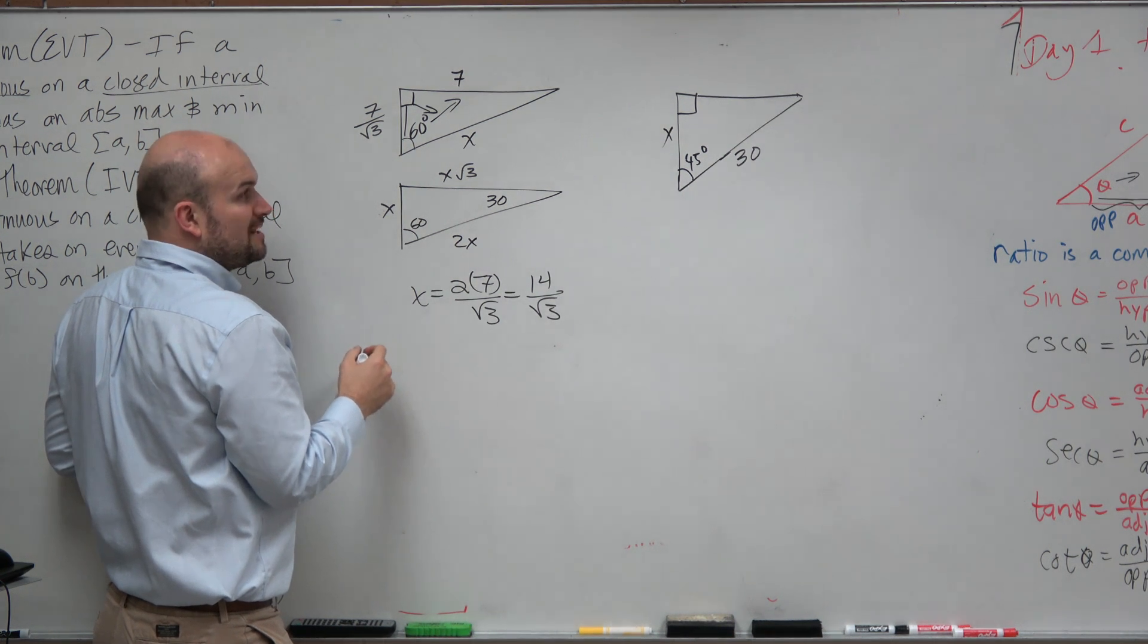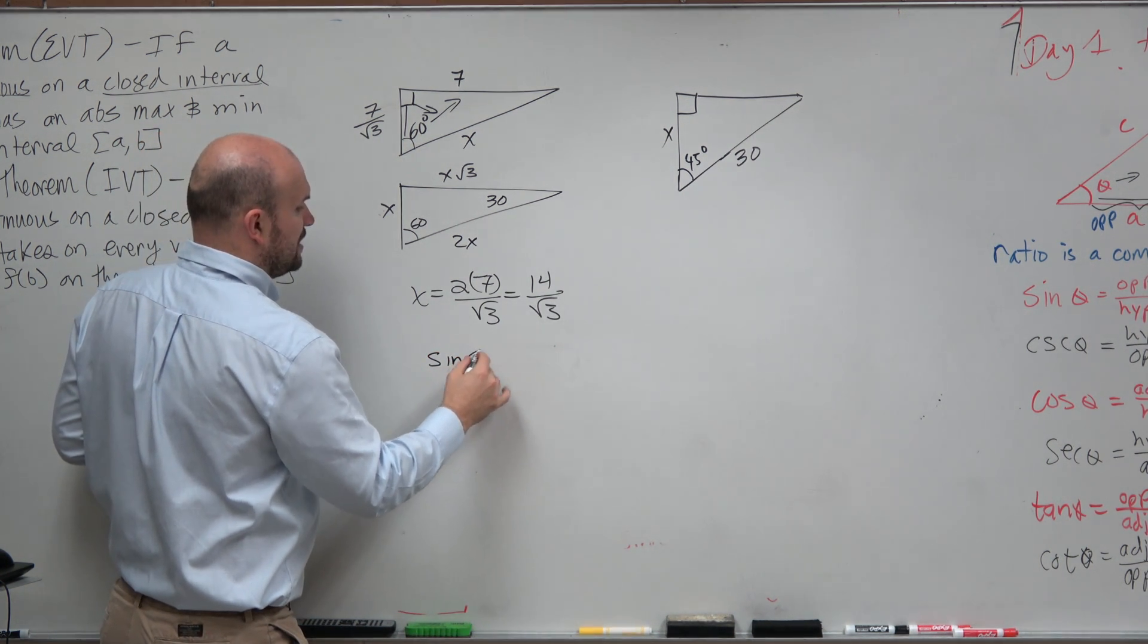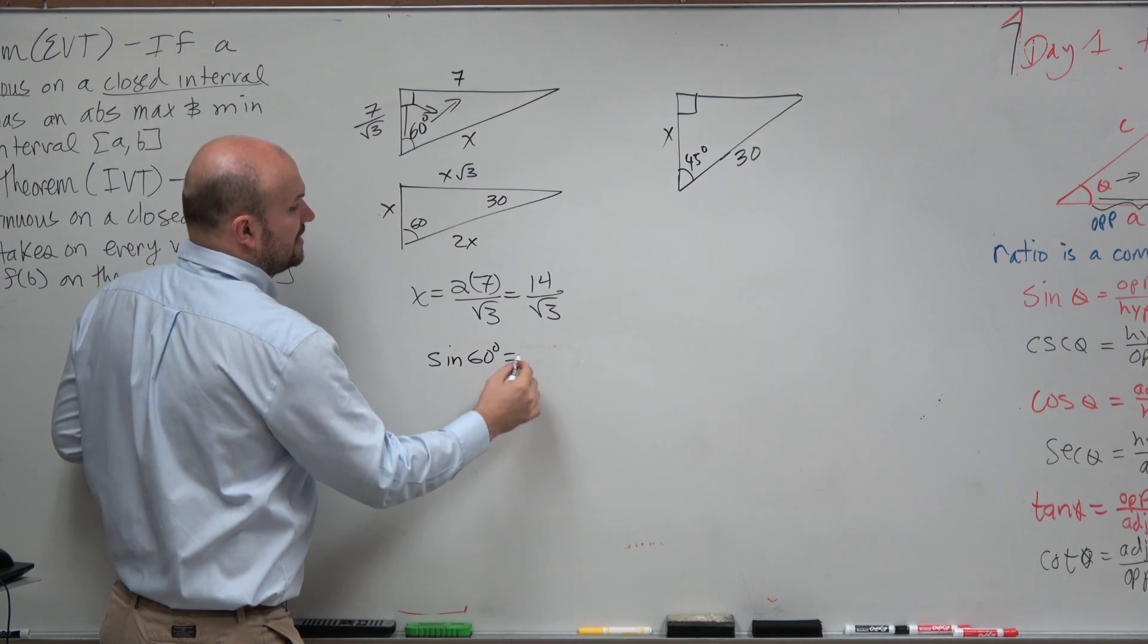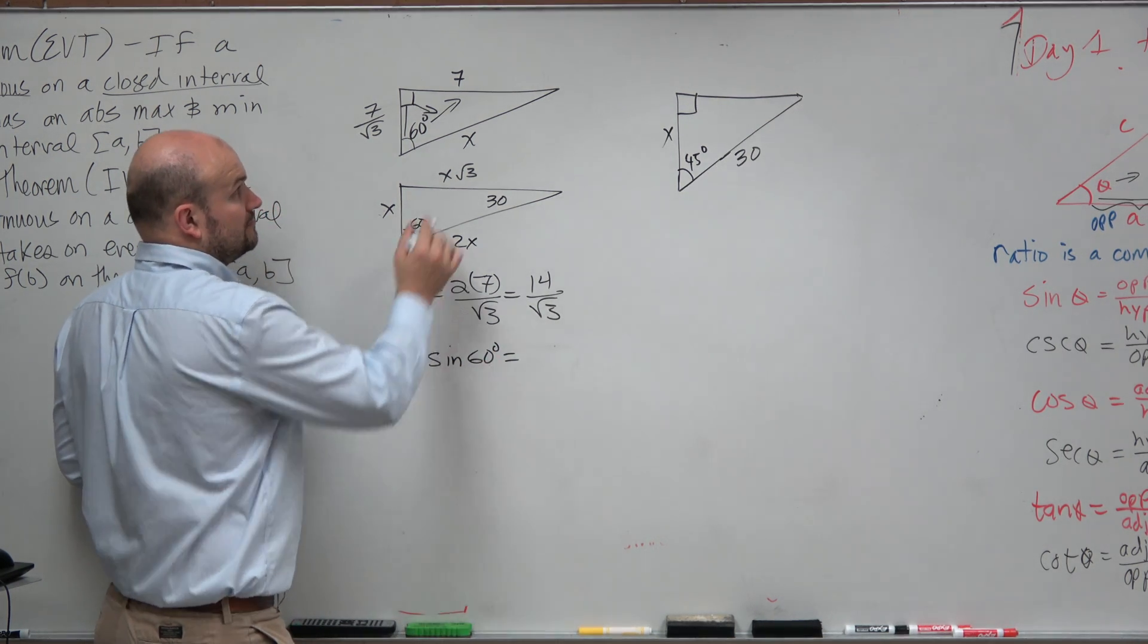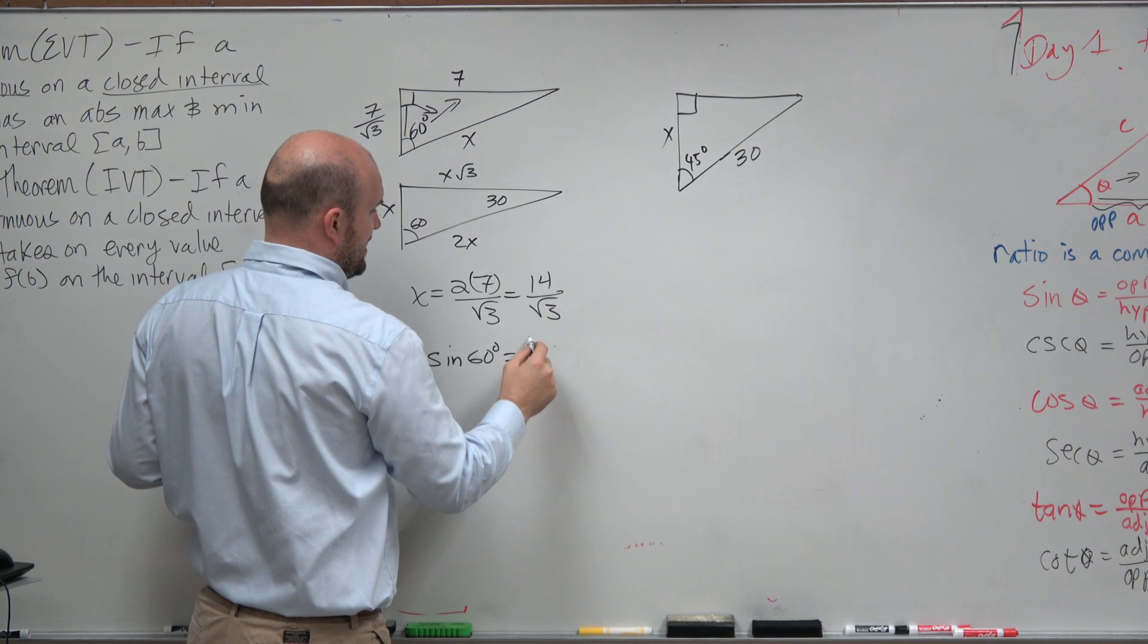The adjacent is between the angle and the 90 degrees. So we could write a trigonometric function. We could say the sine of 60 degrees is equal to opposite over, I'm sorry, opposite over hypotenuse.